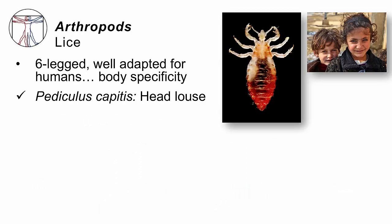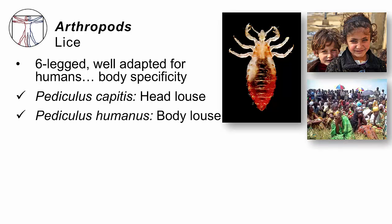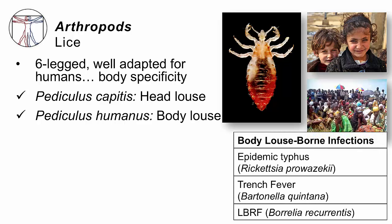Lice have six legs, and unlike ticks which like the wilderness, lice like human beings — that's their job. There are several subcategories. Pediculus capitis is the head louse, which loves to go to the hair on your head. Children, no matter how cute when they get their heads together, can spread these creatures from one head to the next. There's another subspecies, Pediculus humanus, the human body louse. It's adapted for your body and likes to live in the seams of clothing — when you put clothing on, it comes out and bites you. That's a huge problem for patients living in austere settings such as refugee camps. The key point: the head louse does not spread infection, but the body louse does.